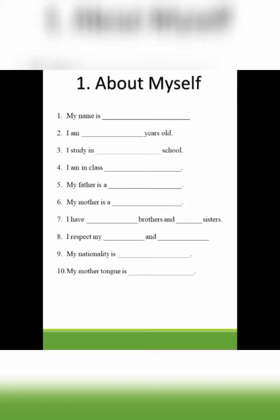You are six years, seven years, eight years — how old are you? Write your age. Number three: I study in dash school. Here you will write the name of your school, for example Christ the King Convent. Number four: I am in class dash. You will write your class — first, F-I-R-S-T.